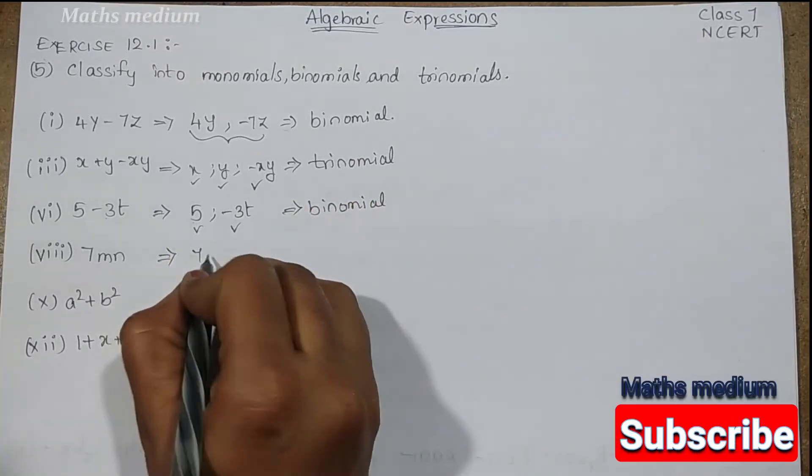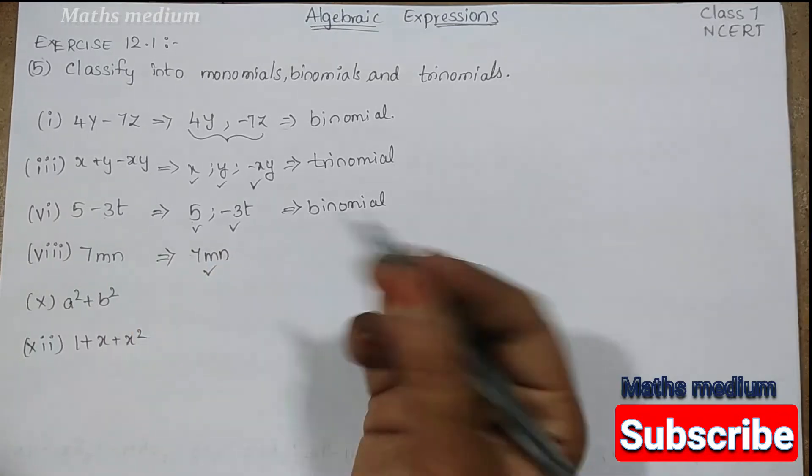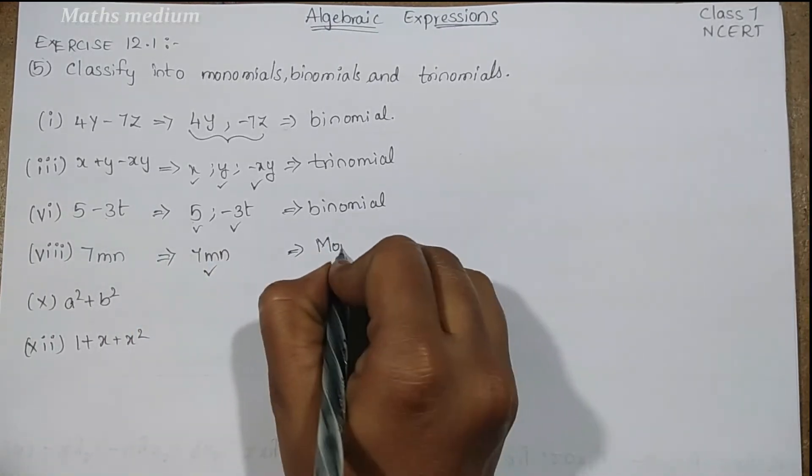Another one, 7mn. In this we have only one term, so that is called monomial.